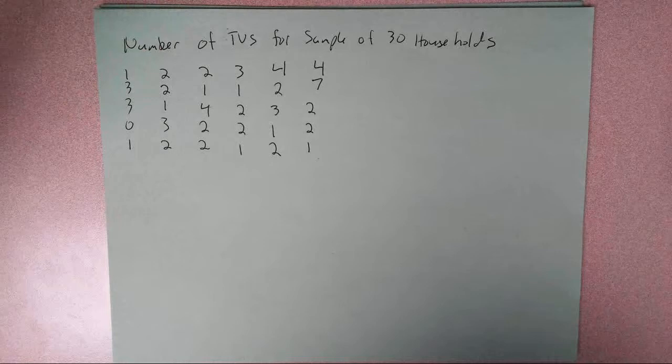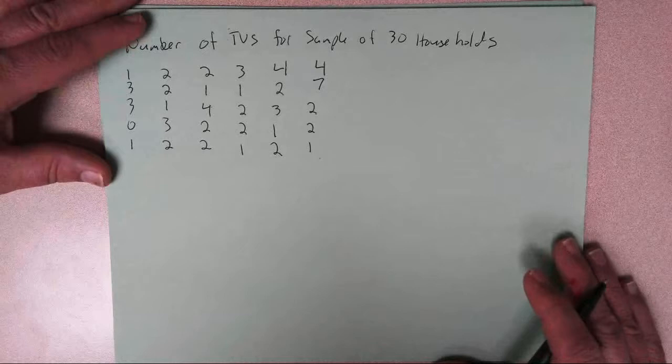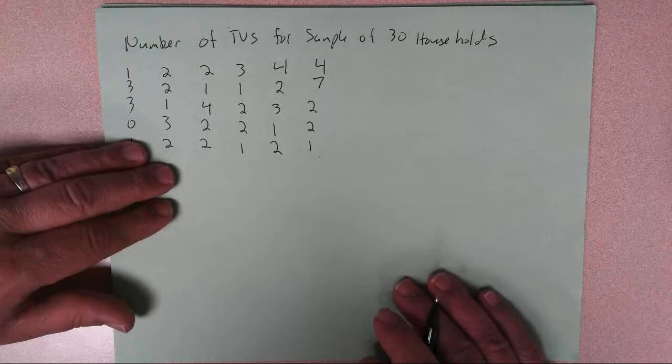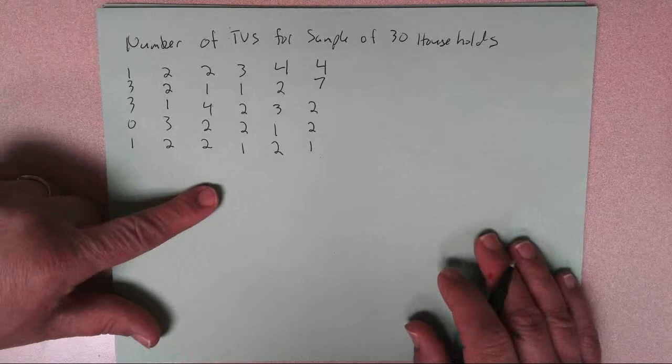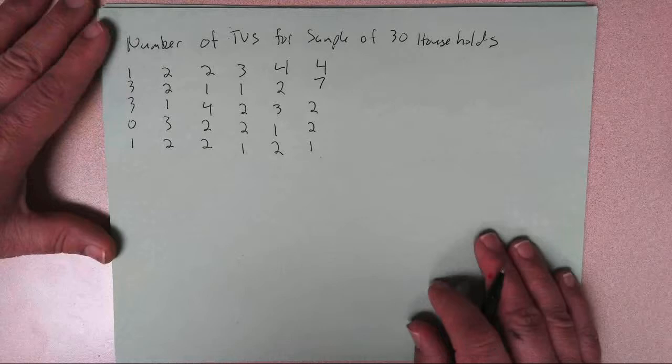The first part of statistics is called descriptive statistics, and it's the techniques you use to organize and describe data. So let's say this is a data set. I took a sample of 30 households, I asked them how many TVs they had, and this is my data. This is the number of TVs that each household had.